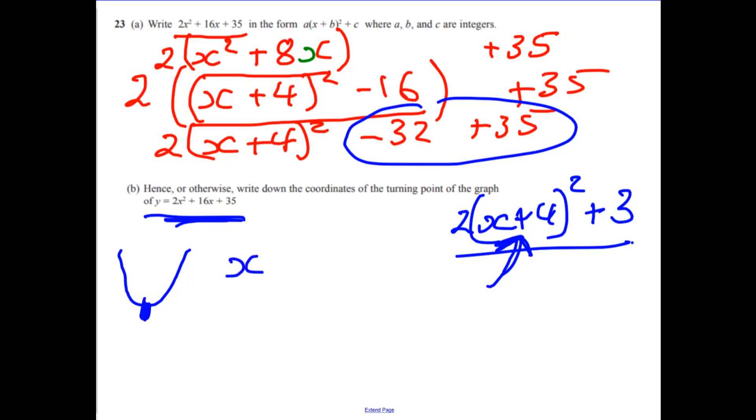Well, it would be equal to 0 when x is equal to minus 4. What would the answer be? Well, the answer would be y equals 3. So the coordinates of the turning point are minus 4, 3.